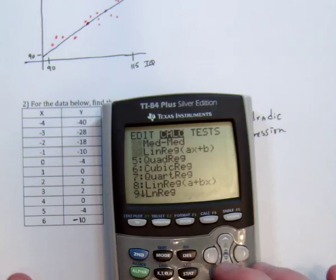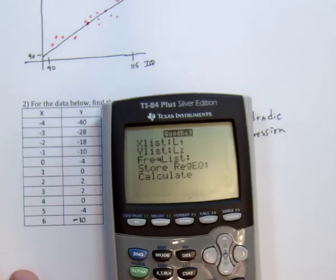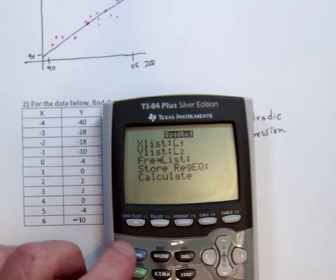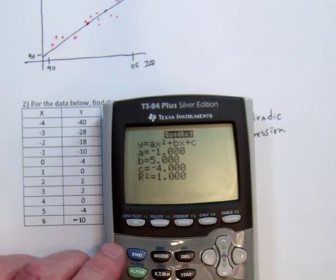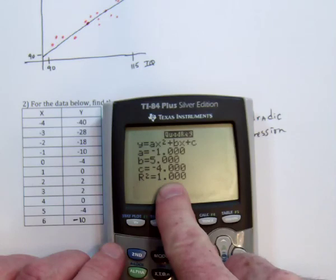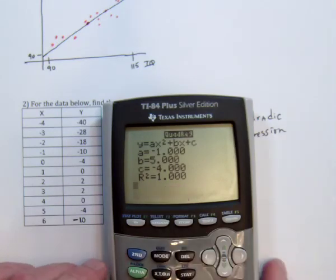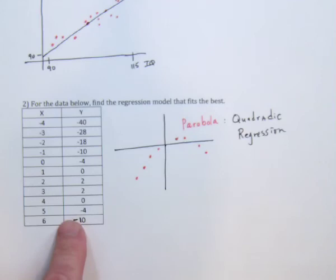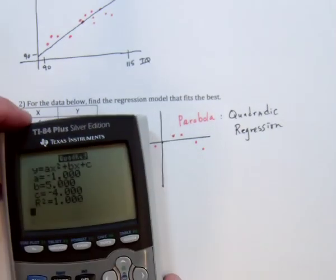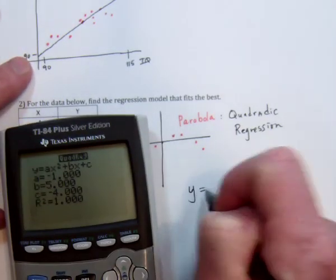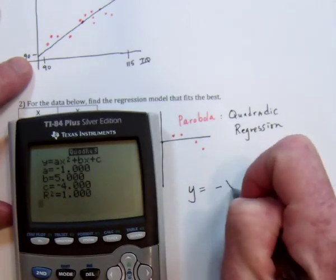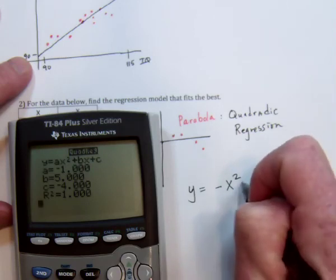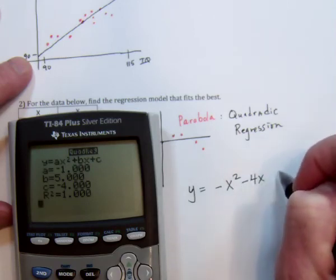And then my data is in list 3 and list 4. And calculate. So it says that r squared is equal to 1. So it's a perfect fit. That's because I made this data up from a quadratic so that it would fit perfectly. But we still get to do the last part of it. The equation is negative 1. So that goes in front of x squared. And then minus 4x. Oops, that's a 5. I missed the 5.